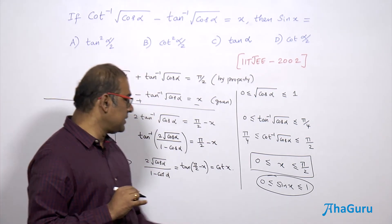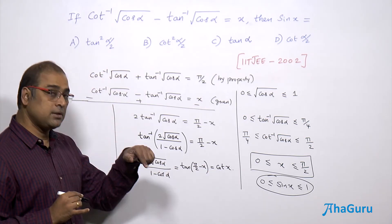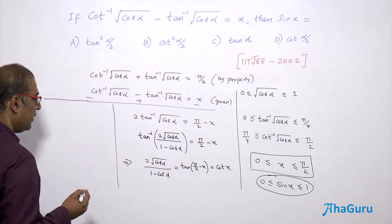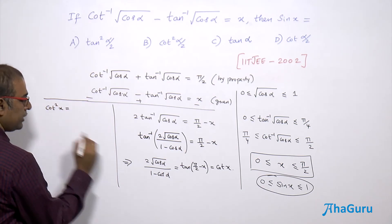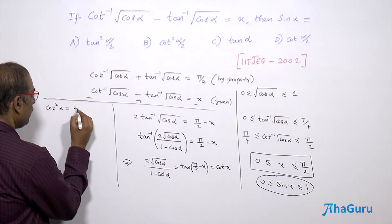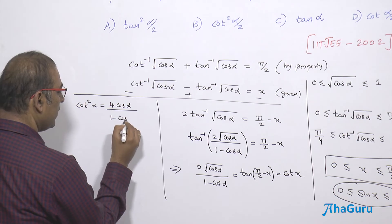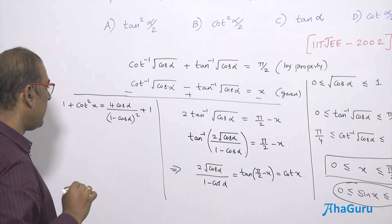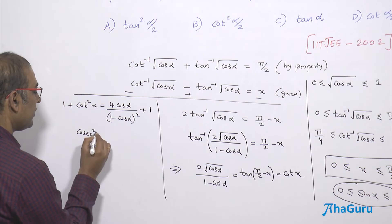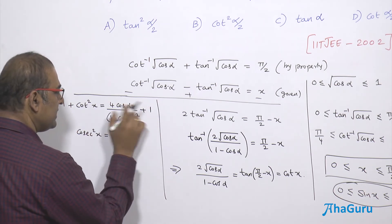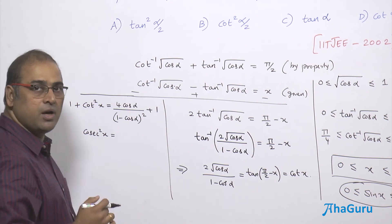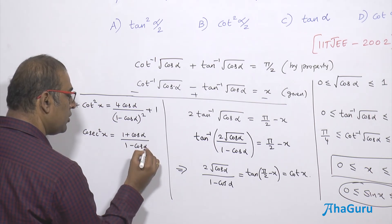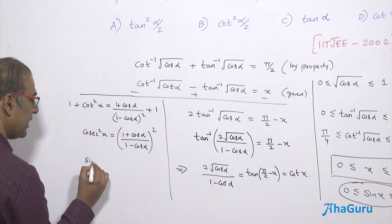Now we want sin x. The plan is: square cot x to get cot²x, then use the identity 1 + cot²x = cosec²x to find sin²x. So cot²x = 4cosα / (1 - cosα)². Adding 1 to both sides, 1 + cot²x = cosec²x, and the numerator becomes (1 - cosα)² + 4cosα = (1 + cosα)².